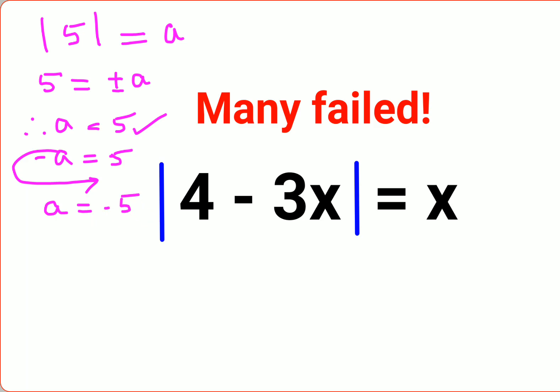Using the same logic, we can say when I want to remove the mod on both sides, I can say it equals either plus x, or we can say 4 minus 3x equals minus x.